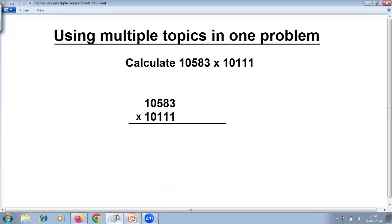We are using multiple topics in one problem. The problem here is 10583 multiplied by 10111. The main topic here is base method of multiplication above base, and within that topic we'll be using multiplication by series of one.